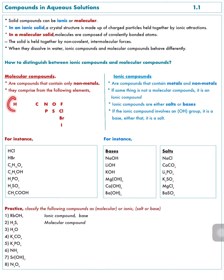For example, NaOH: O and H are in the table but Na is not, so the compound is ionic. Second, there is an OH group in the compound, so this ionic compound is a base. Likewise, lithium hydroxide, LiOH: O and H are present but Li is not among these elements, so LiOH is an ionic compound — and it belongs to the bases because it contains an OH group.